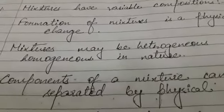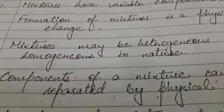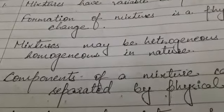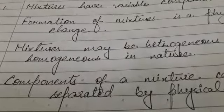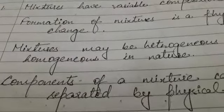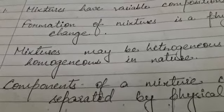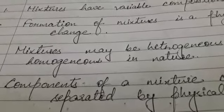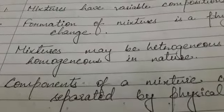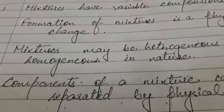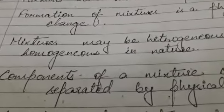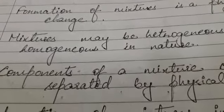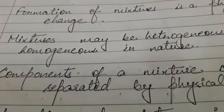Mixtures may be heterogeneous or homogeneous in nature. It is possible that two components mixed together intermix so thoroughly that we cannot segregate them and there is no separation boundary. But in some cases when two or three substances are mixed, different layers form and they do not intermix completely. So a mixture could be homogeneous or heterogeneous depending upon the size of particles and their solubility.